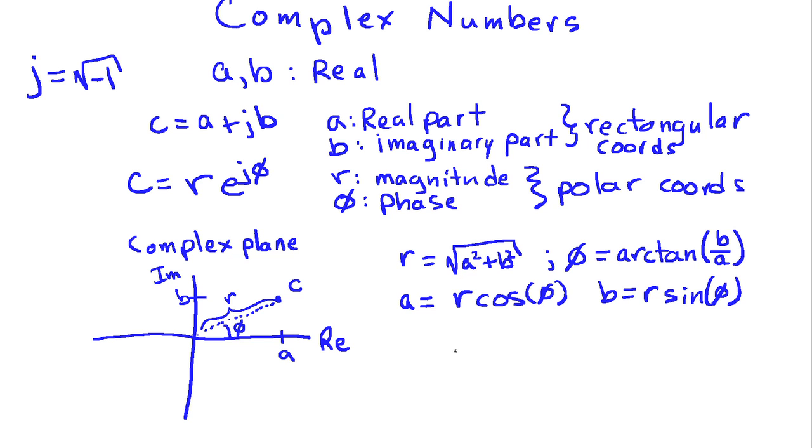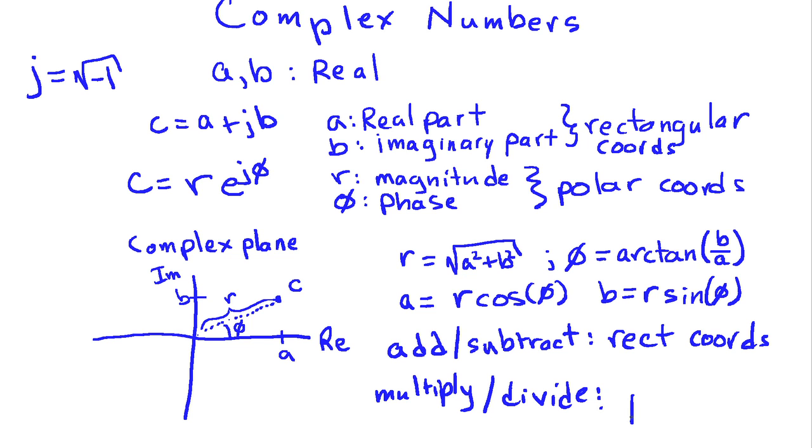Now I said that depending on what we want to do with these complex numbers, it's useful to have either the rectangular coordinate representation or the polar coordinate representation. And it turns out that if we want to add complex numbers, or subtract them, that's best done in rectangular coordinates. But if we want to multiply or divide, that's best done in polar coordinates.